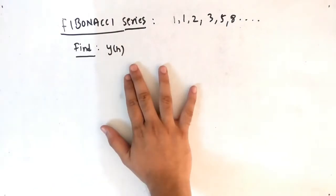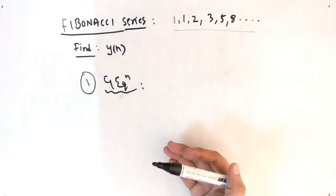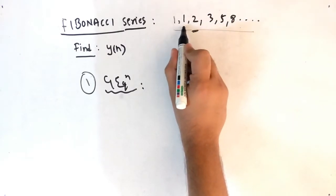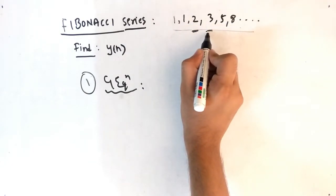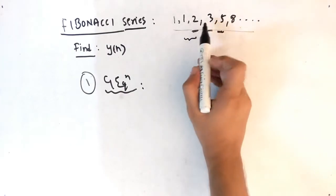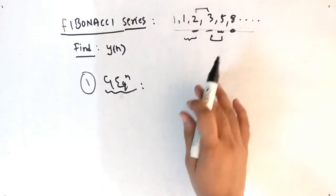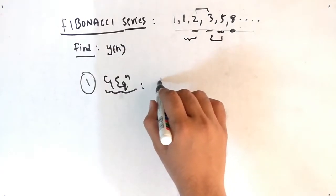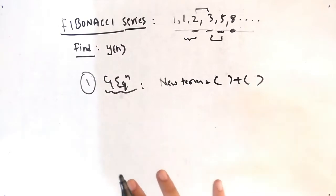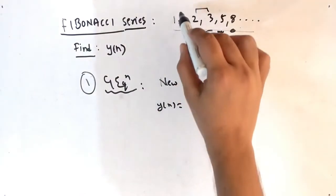We have to find y[n], the generalized equation. The concept is: to get the next term, add the previous two terms. To get 2, add the previous two; to get 3, add 1+2; to get 5, add 2+3; to get 8, add 3+5. So the new term equals the addition of the previous two terms. We need to write that as an equation: y[n] equals the addition of the previous two terms.